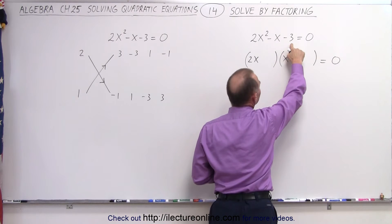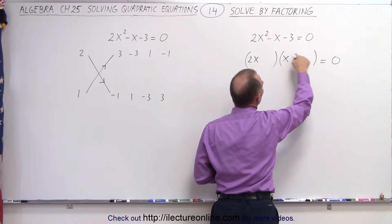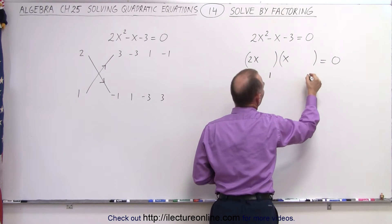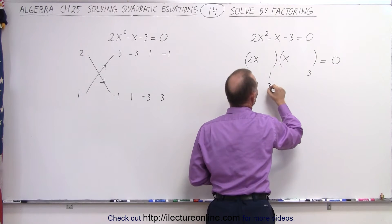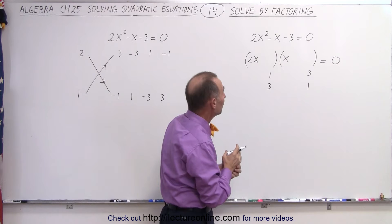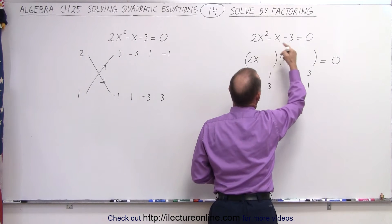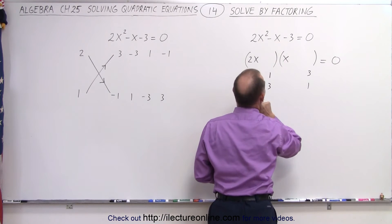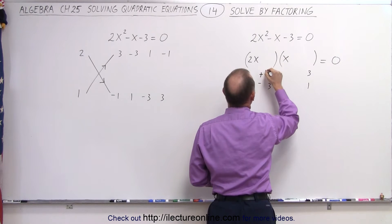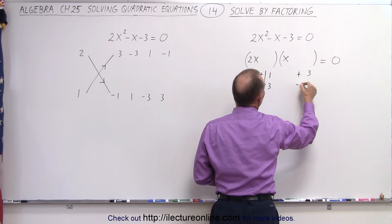We also need a 3 at the end, that means that the product of these two must be 3, so either I can have a 1 and a 3, or a 3 and a 1 there. But then I have to take care of the middle term. I need a negative 1 in the middle term, so I also know that I need a positive and a negative sign.